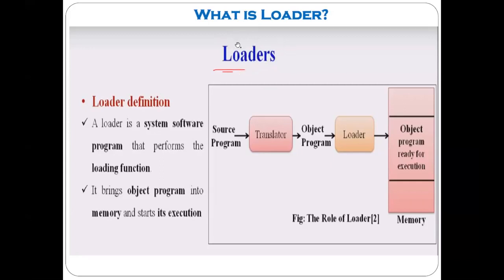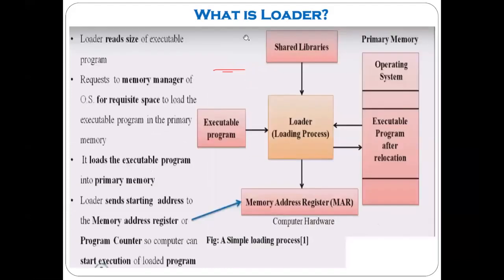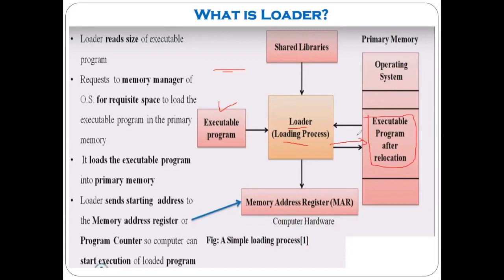Now let's see some more details about the loading process. Here is another modified diagram. When the translator translates your source program into the object program, after the linker links different object modules together it becomes the executable program. This executable program is loaded by the loader into the main memory — that is the loading process. You can see that after relocation, the executable program is loaded into main memory.